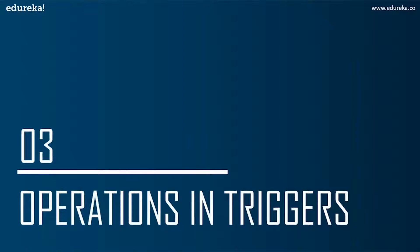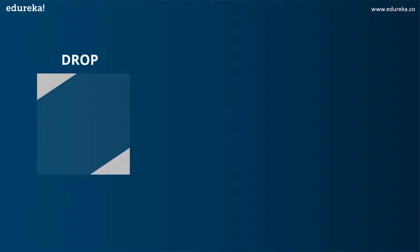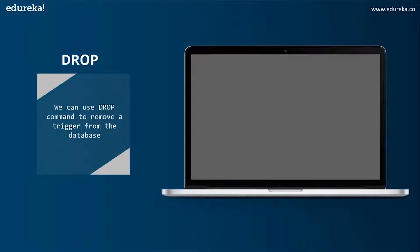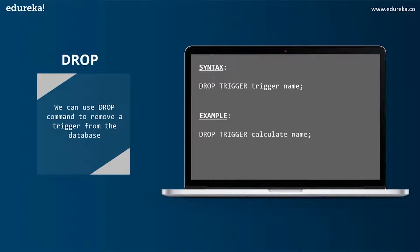Now let's implement an example of a trigger in SQL. The next topic is operations in triggers. We can perform many operations using triggers — some may be simple and some a little complex, but once we go through the query, it's easy to understand. The first operation is DROP. We can use the DROP command to remove a trigger from the database, and the syntax is: DROP TRIGGER trigger_name.